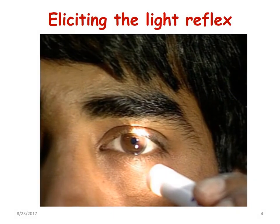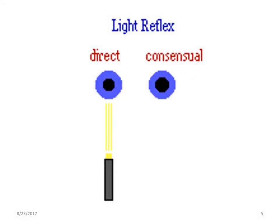This picture shows how to elicit the light reflex by shining a flashlight into one eye while shielding the opposite eye with the palm. When this is done, not only does the pupil of the eye in which the light is directed constrict, but also you find that there will be constriction of the opposite eye too.